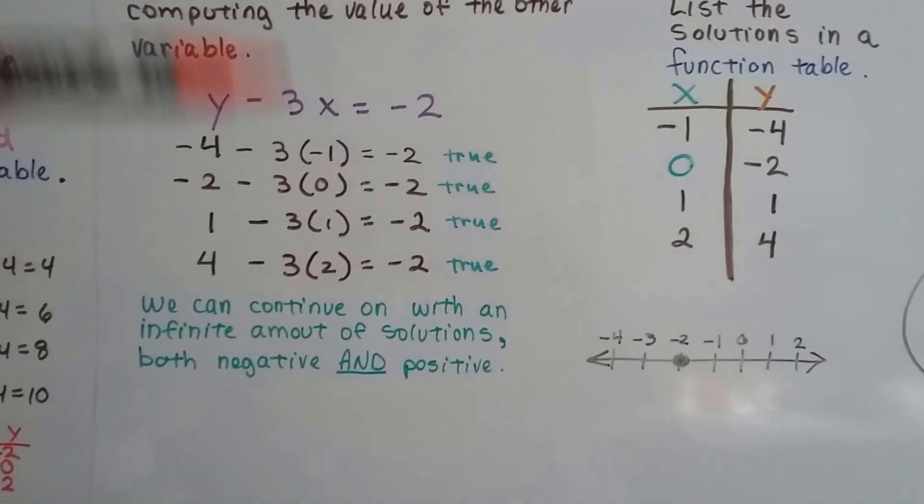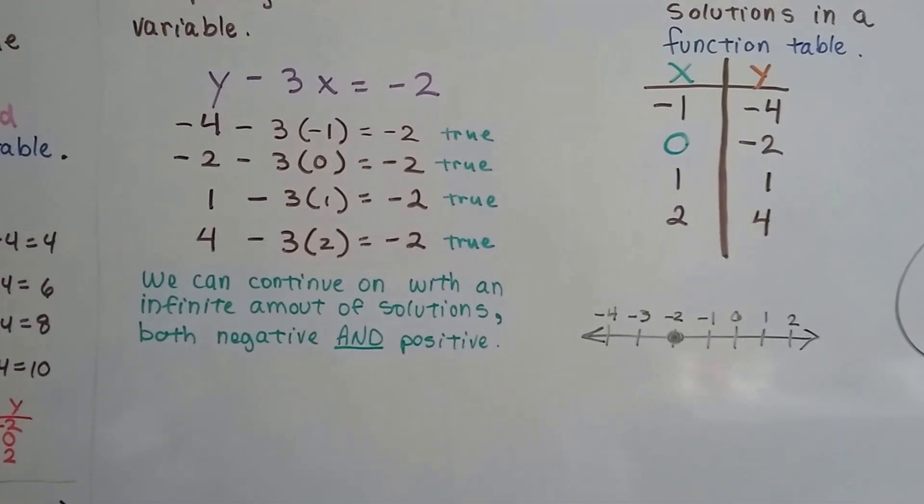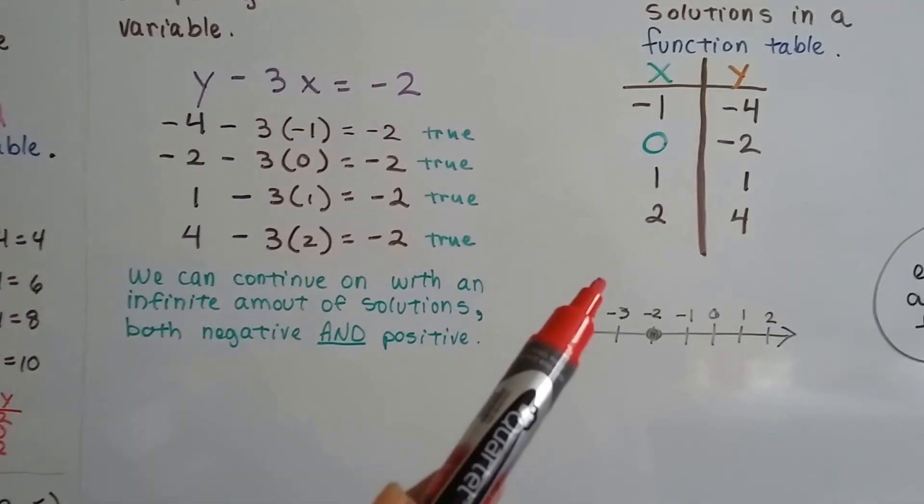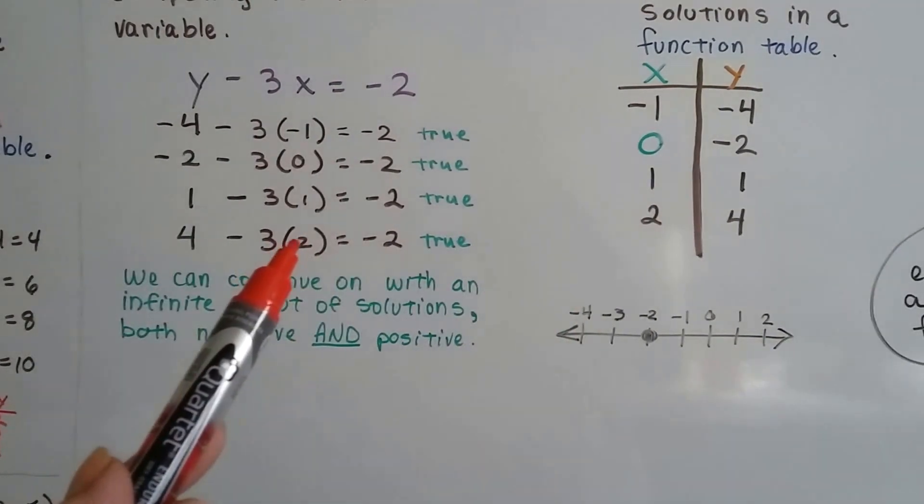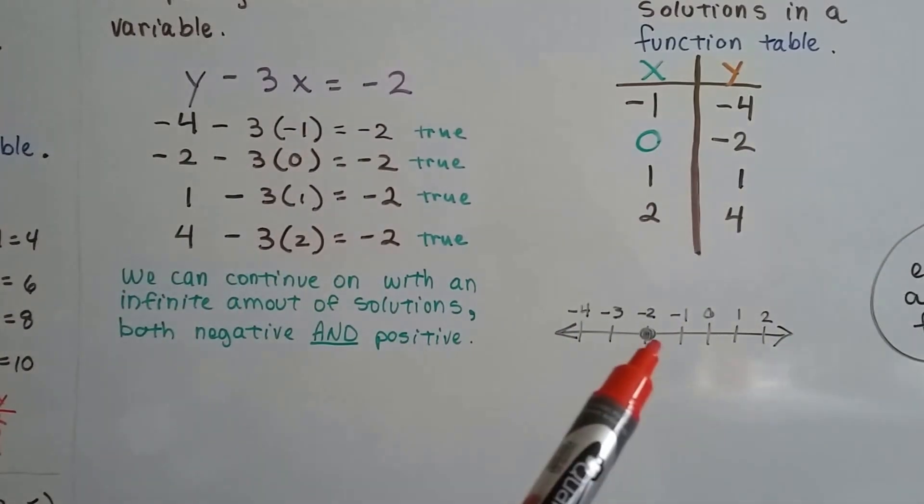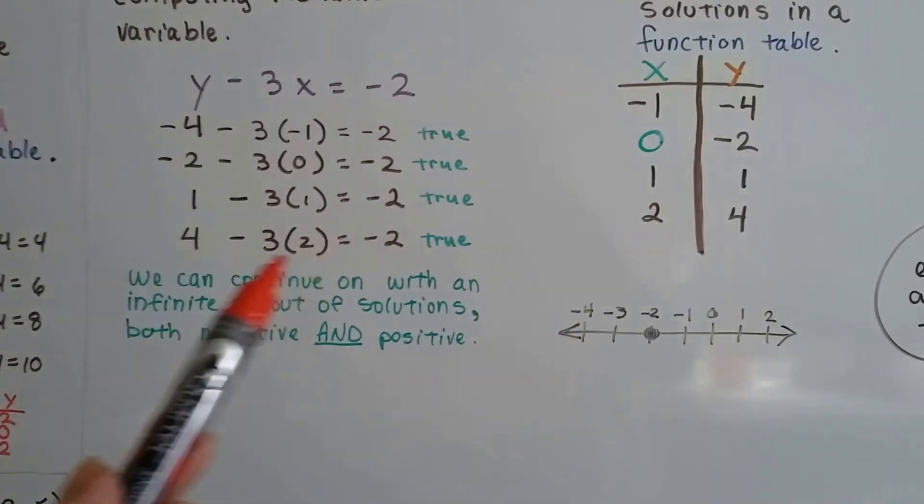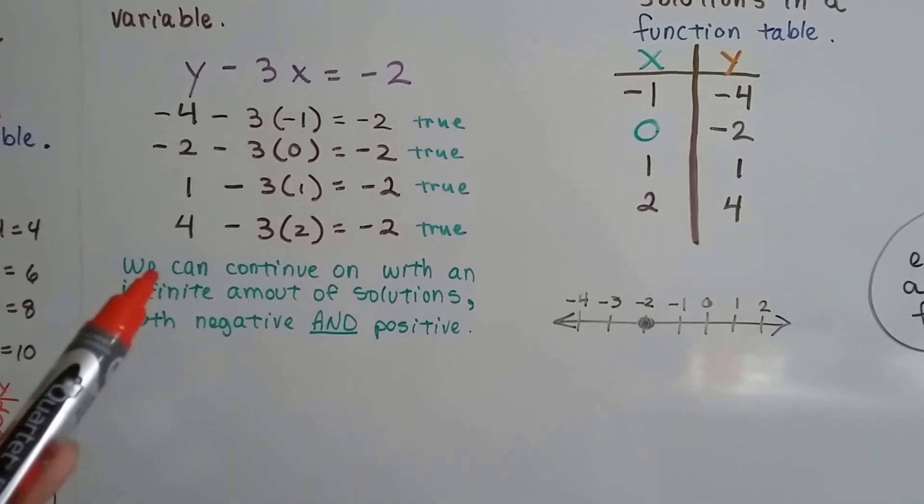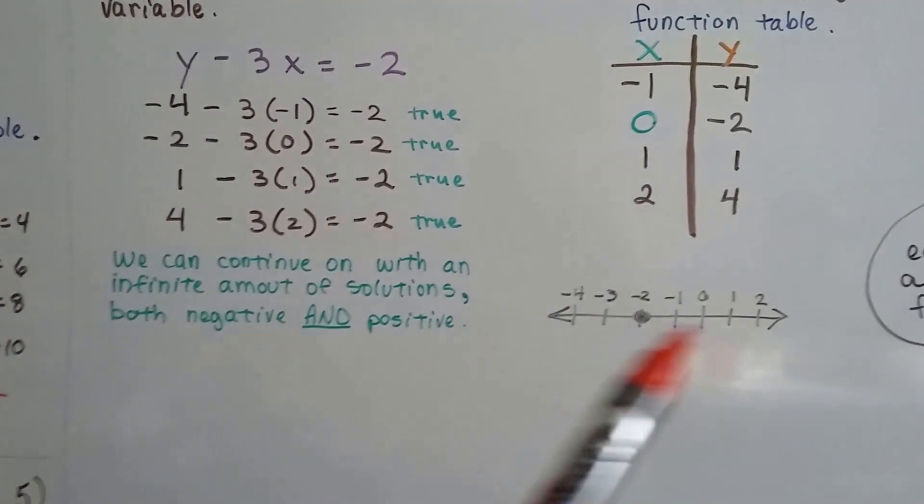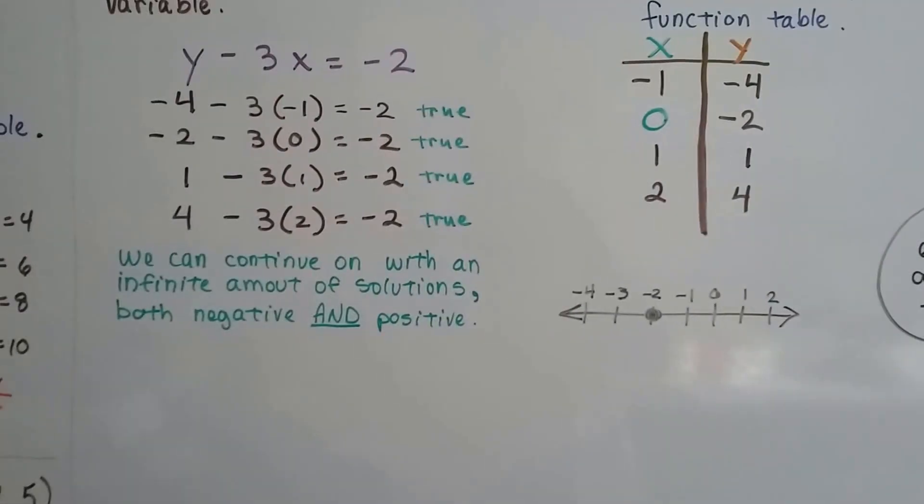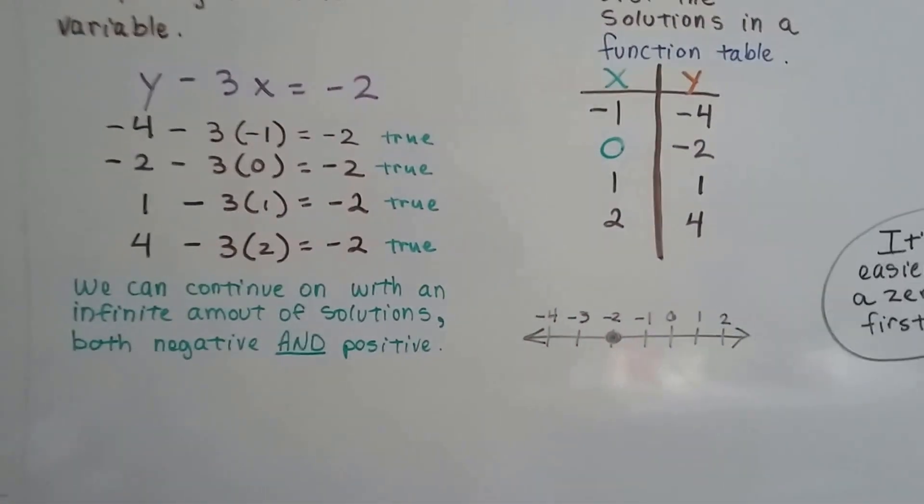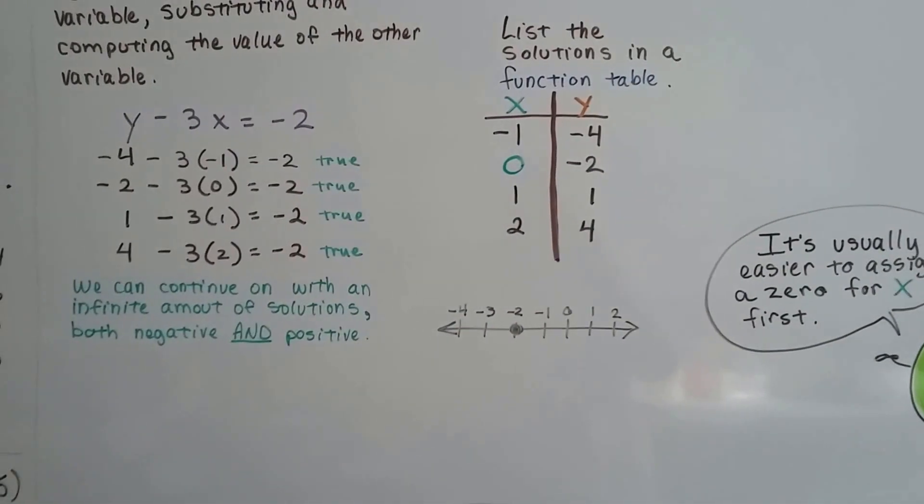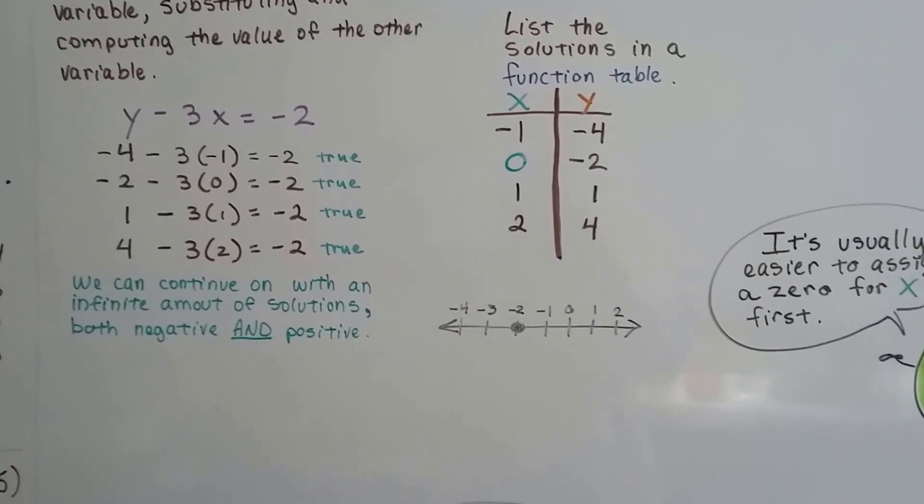And we can continue up or down with an infinite amount of solutions, both negative and positive. If x is a 2, what can we take away 6 from to get to a negative 2? It would be a positive 4. And if you have to use a number line to help you do it, then do it until you start getting used to this. But we can go infinitely into the negatives or positives with our function table, with our solutions, our ordered pairs.